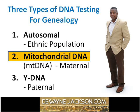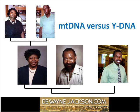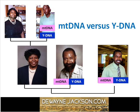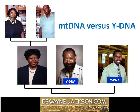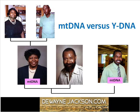Y DNA is used to trace your father's direct male lineage. Now let me explain the difference between mitochondrial DNA and Y DNA. Women only inherit and pass down mitochondrial DNA. Men inherit both Y DNA and mitochondrial DNA, but men only pass down Y DNA to their male children. For example, the mitochondrial DNA inside me came from my mom, and my mom inherited a copy of this same mitochondrial DNA from her mother.